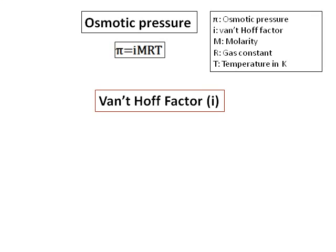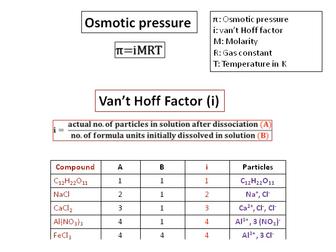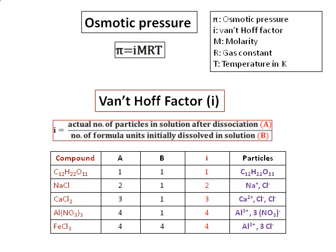For osmotic pressure, we have the van't Hoff factor. The van't Hoff factor, i, is the ratio of the actual number of particles to the number of formula units. It tells you how many ions are in the solution and is more applicable to ionic compounds.